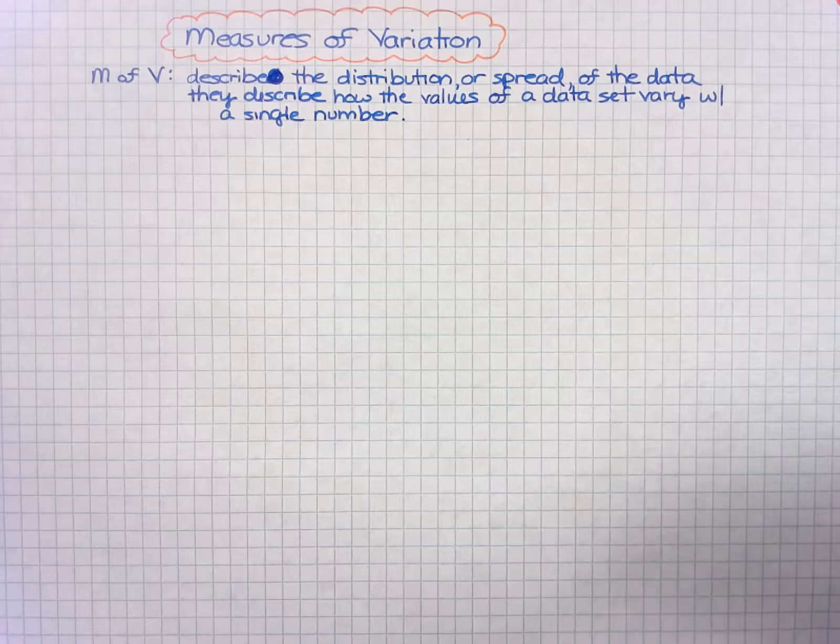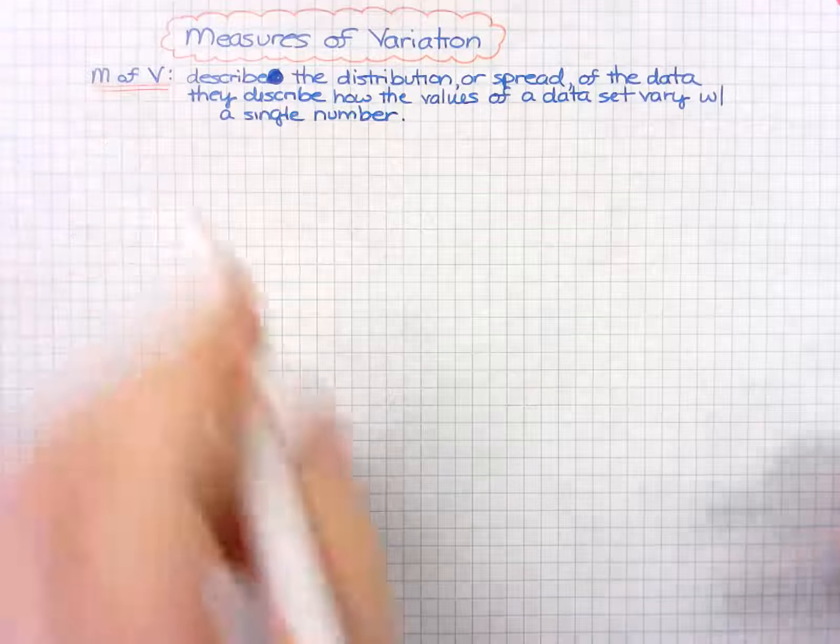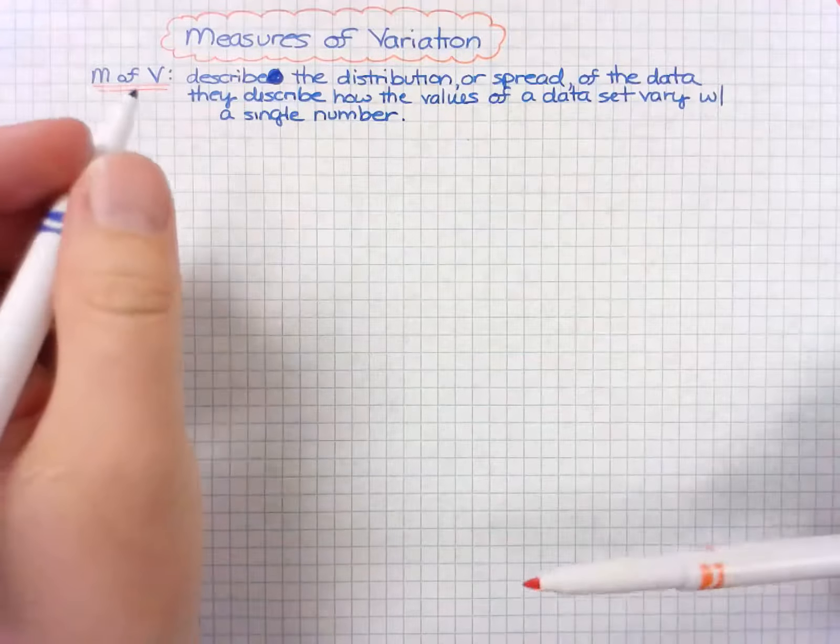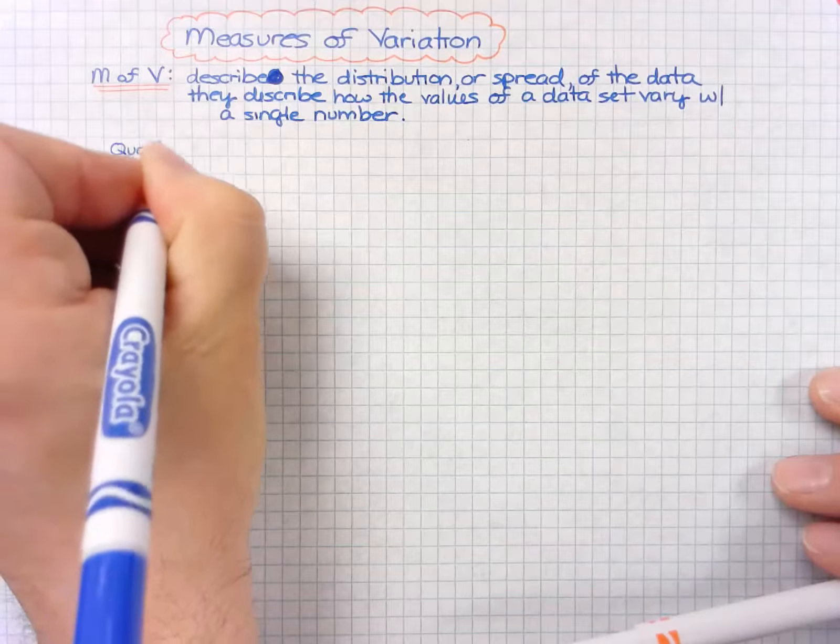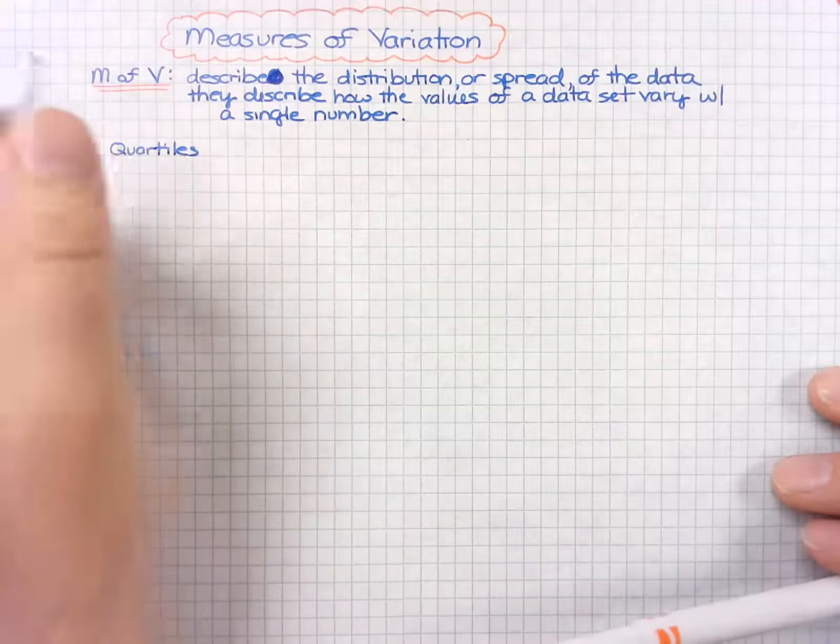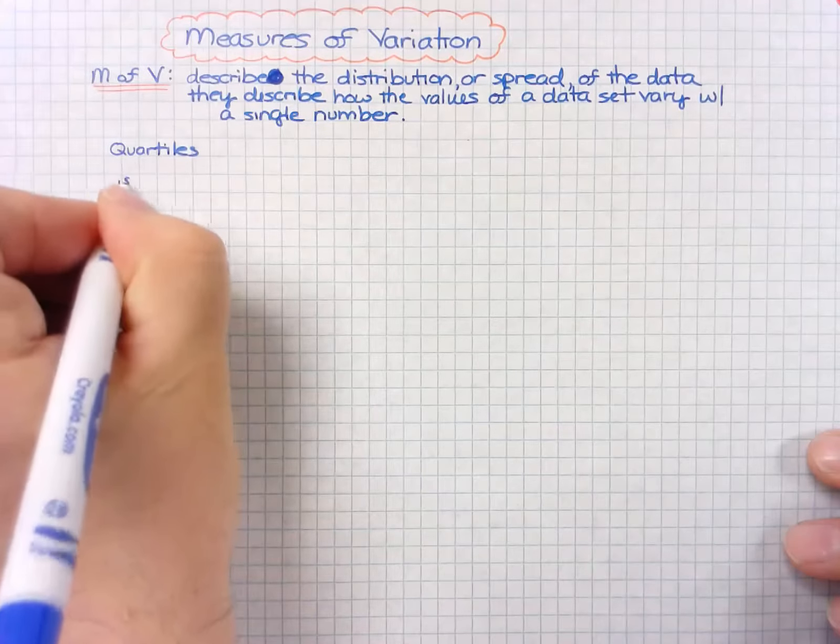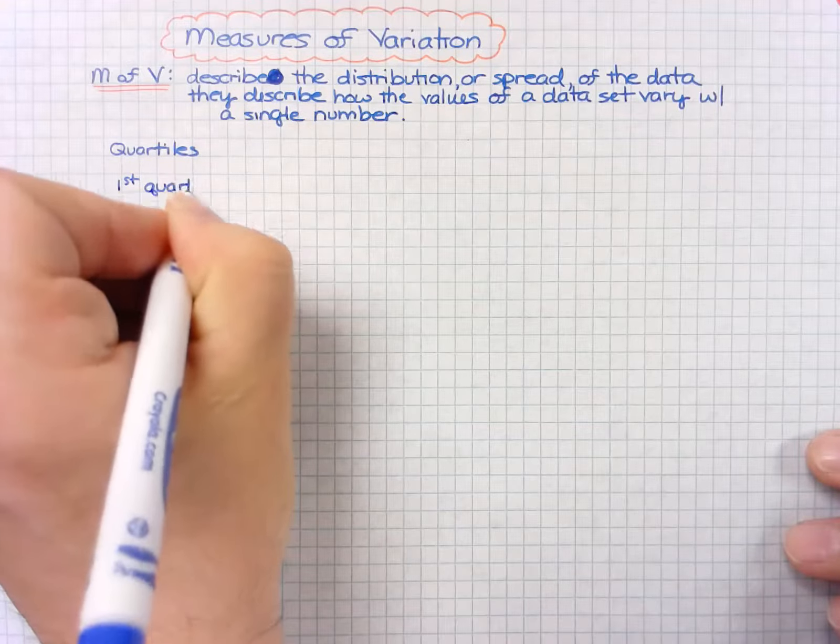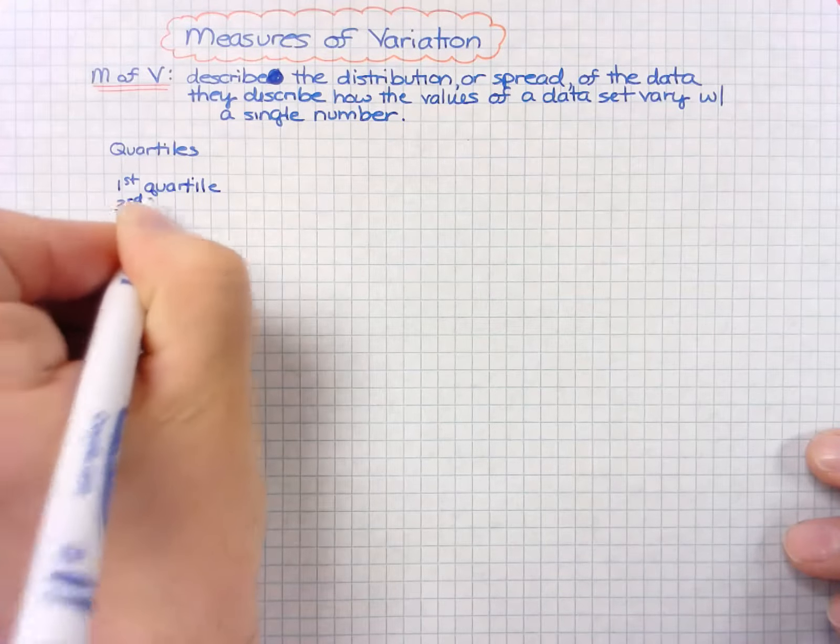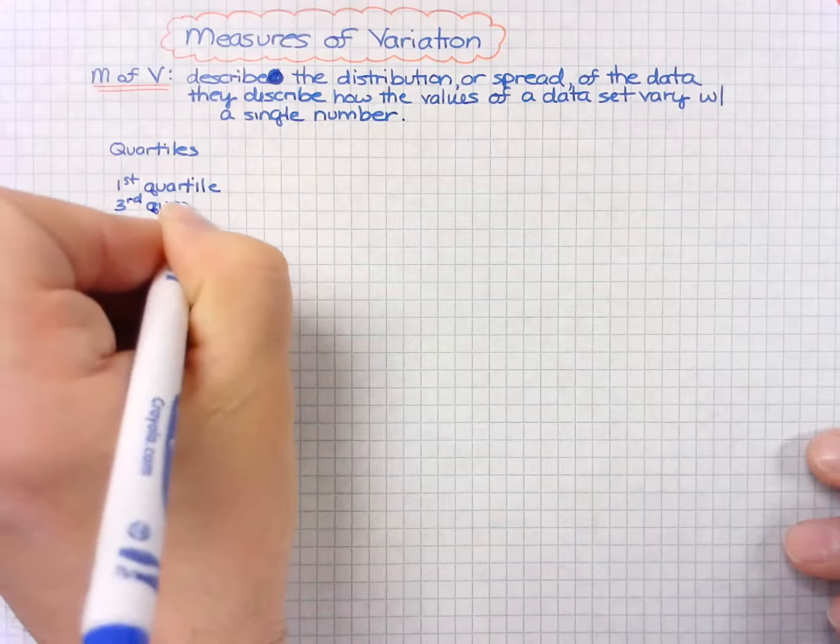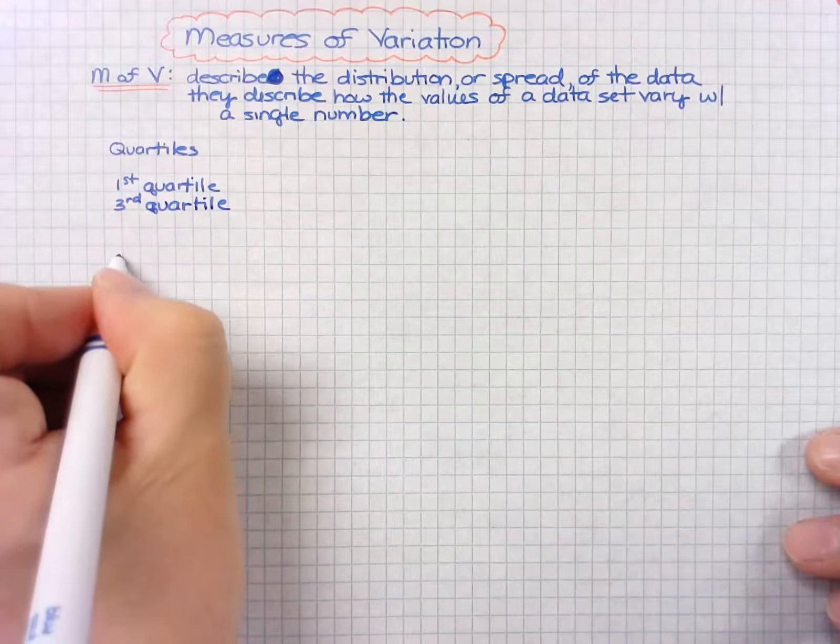There are some ways that we can express measures of variation. So let's take a look at a couple of those. One would be quartiles, and within quartiles we have the first quartile and the third quartile.